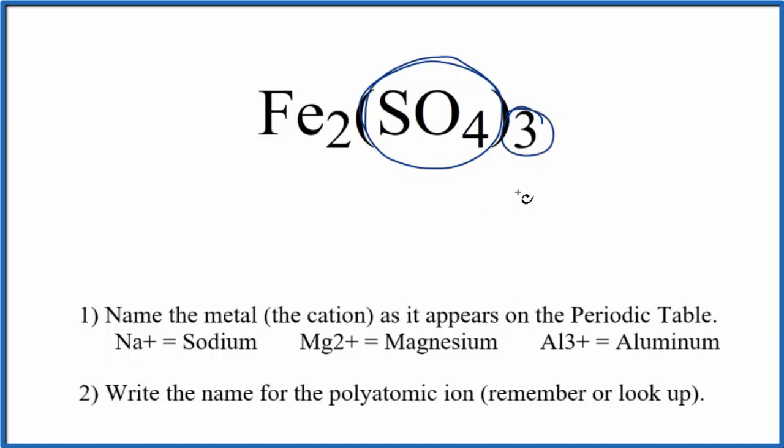We actually have three sulfate ions, and they're bonded to these two iron atoms. Iron's a transition metal, so we have a metal here. This metal's bonded to the nonmetals. This is an ionic compound.